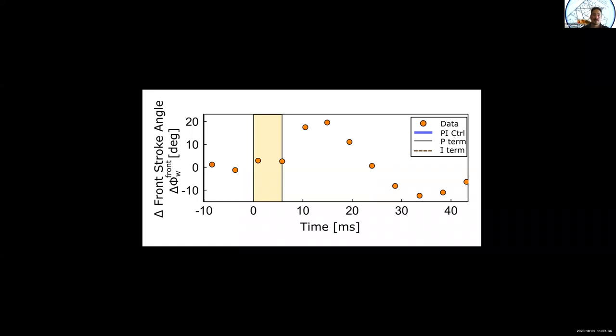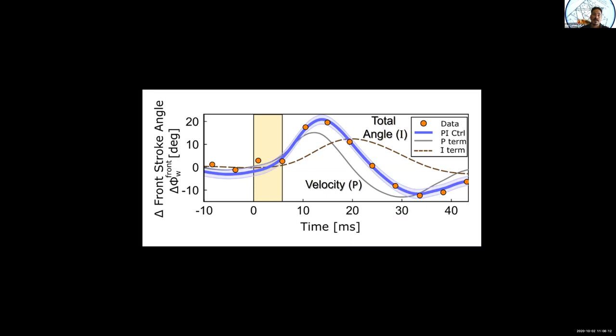I'm not going to take you through all the control theory that Leif and actually his brother did to work this out, and then later students like Tsevi Batus now who's at Hebrew U and Sam Whitehead whose data I'm showing to you here. But the basic idea is the following: if I take a look at the body of the fly itself, this is what the pitch velocity looks like. If I take the integral of that, that's this curve over here, this dashed curve, and this is really the total angular displacement, the integral of the pitch velocity that the fly has undergone. What's amazing is that if I take these two curves and add them together with appropriate coefficients, I can generate this blue curve which goes right through the data.